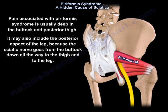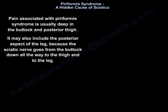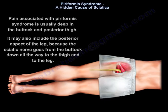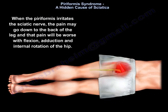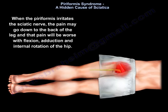The pain associated with piriformis syndrome is usually deep in the buttock and posterior thigh. It may also include the posterior aspect of the leg, because the sciatic nerve goes from the buttock down all the way to the thigh and to the leg. When the piriformis irritates the sciatic nerve, the pain may go down to the back of the leg and will be worse with flexion, adduction, and internal rotation of the hip.